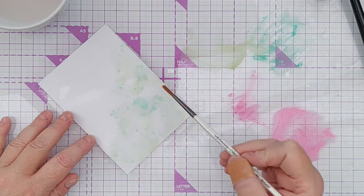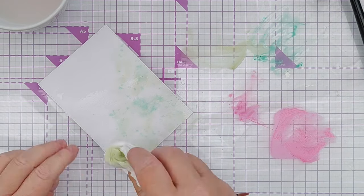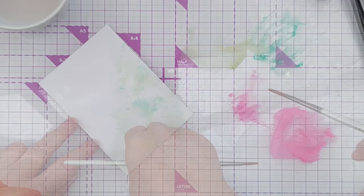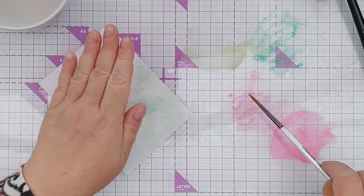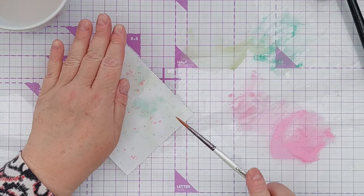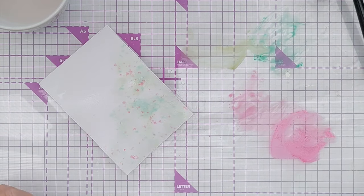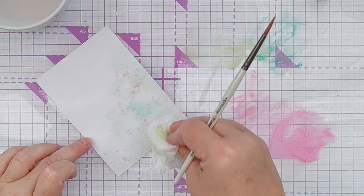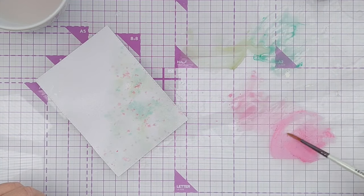I did do a bit of mopping up with a paper towel just to pick up some puddles and some darker areas, and then I spattered on some pink before the green was dry. This is always a bit risky doing wet green and pink or red together because they're opposite each other on the color wheel.